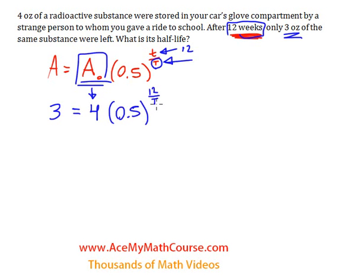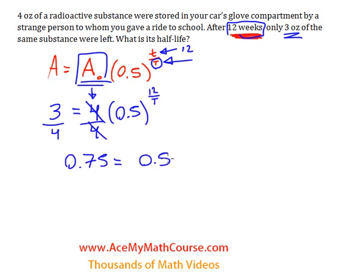We want to solve for big T. My first step here will be to divide both sides by four, so I get three quarters — 0.75 equals (1/2) to the power of 12 over big T.